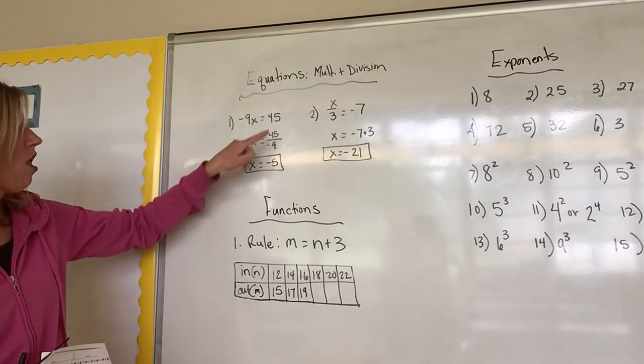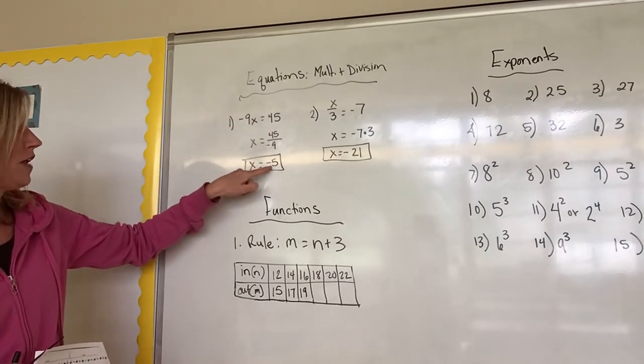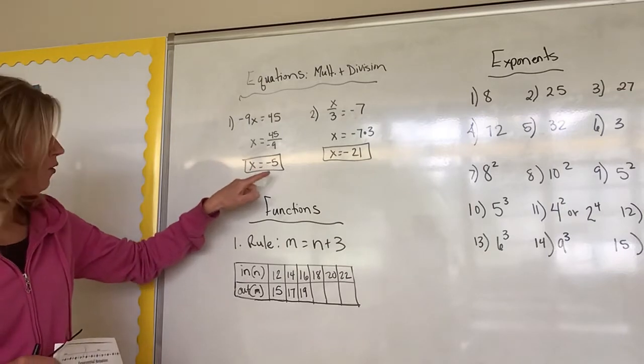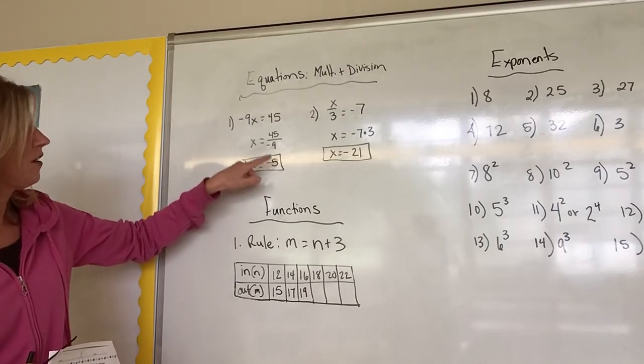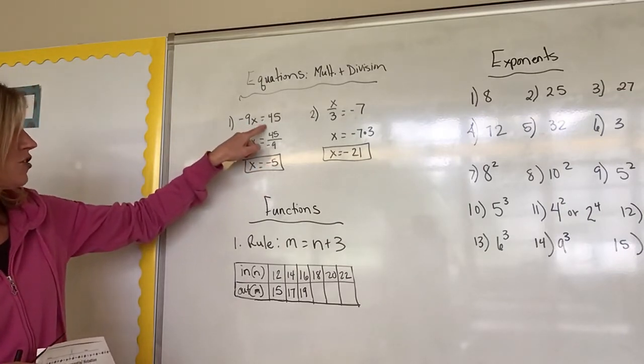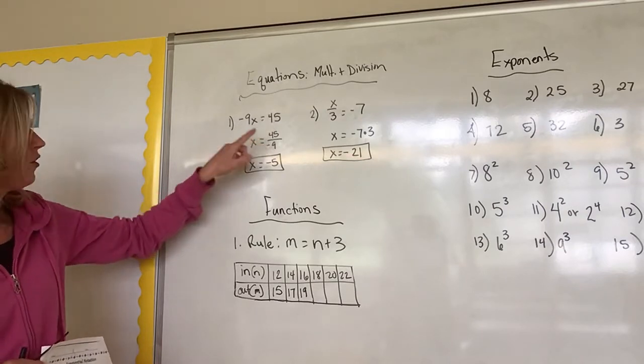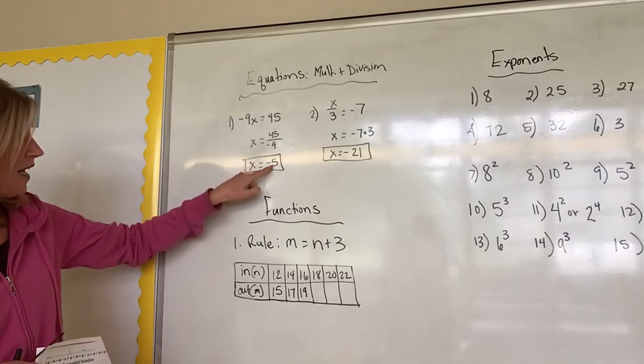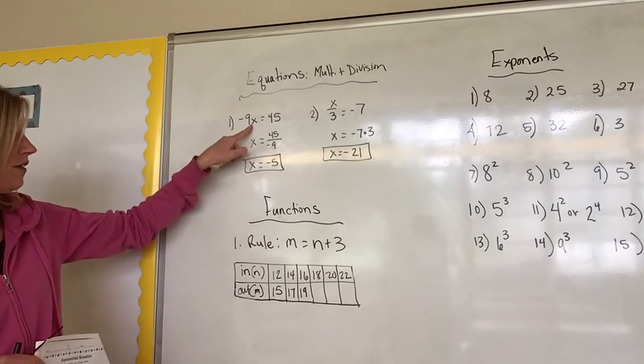My answer x equals negative 5. Now you should be able to take this and put it back in here and it should equal then that answer. So if I have a negative 9 and I times it by negative 5, which I think that's what x is.